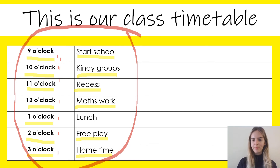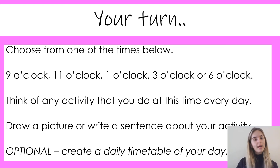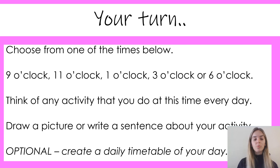Now it's your turn. You're going to choose from one of the times and think of any activity that you do at that time every day. I'd like you to draw a picture or write a sentence about your activity. You might choose nine o'clock — and because we're working from home, think of something you do at nine o'clock at home, like checking your attendance or starting some writing. Or you might choose one o'clock, which could be when you're eating your lunch and having a break.